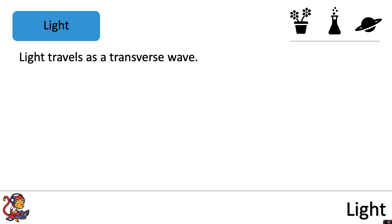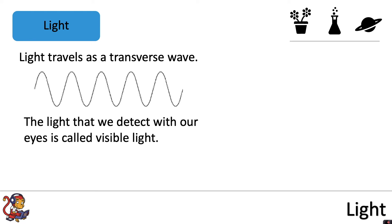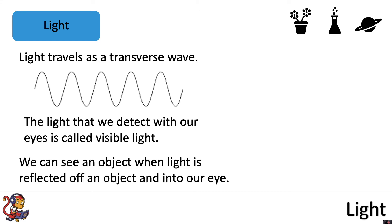Light travels as a transverse wave. The light that we detect with our eyes is called visible light. We can see an object when light is reflected off an object and into our eye.